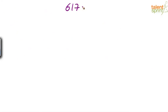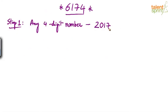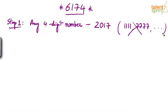There are a few simple steps to follow to uncover the mystery behind this. Step one: choose any four-digit number, but make sure that the number has at least two different digits. For example, let's take the number 2017 — a four-digit number with at least two different digits. Numbers like 1111 or 7777 are not allowed, because all their digits are the same.